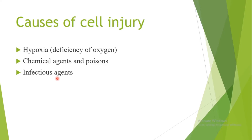Another cause of cellular injury is infectious agents such as bacteria, viruses, fungi, and protozoa. Another cause is immune-mediated processes. The main function of the immune system is to protect our bodies against pathogenic microbes by recognizing them as foreign substances. But sometimes the immune system mistakenly recognizes our own cells as foreign, forming immune reactions that result in cellular injury. This is the basis of autoimmune diseases.